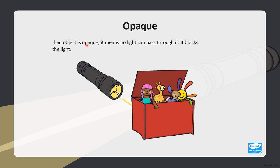If an object is opaque, no light can pass through it — it blocks the light completely. Examples include a box, book, table, and pencil. It will block the light completely and form a very clear shadow.